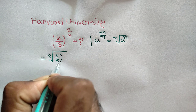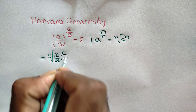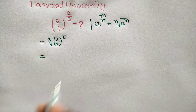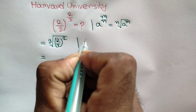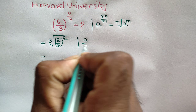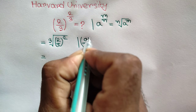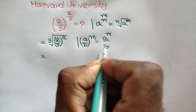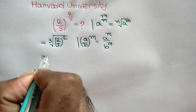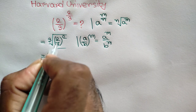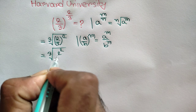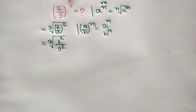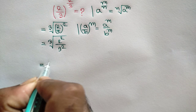We know that (a/b) to the power m is equal to a to the power m over b to the power m. So we can write here: cube root of 2 squared over 3 squared.